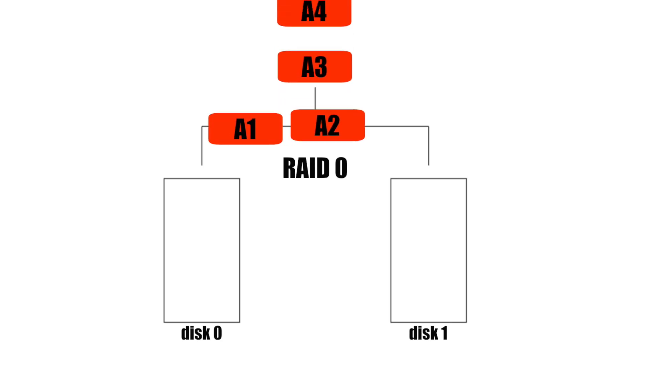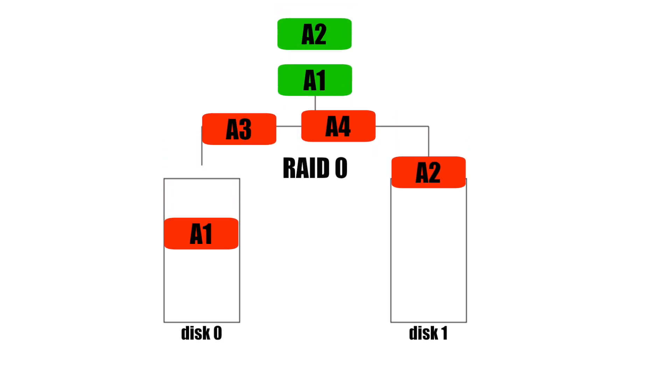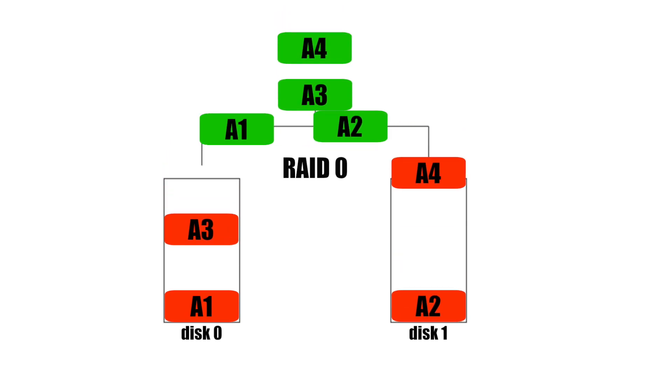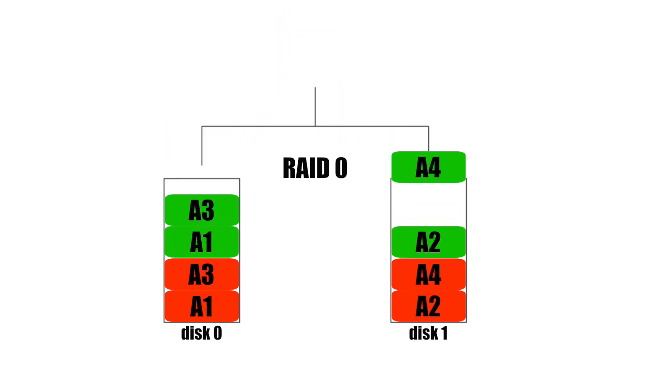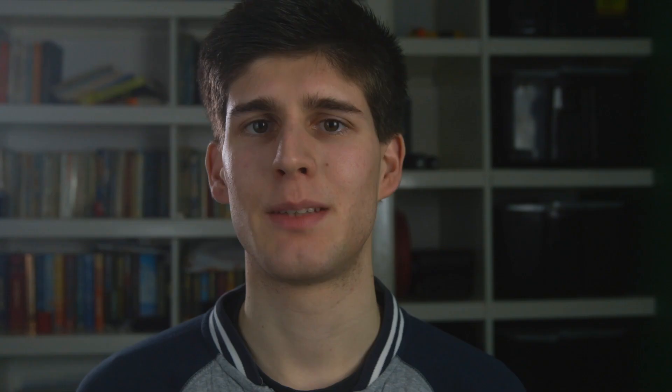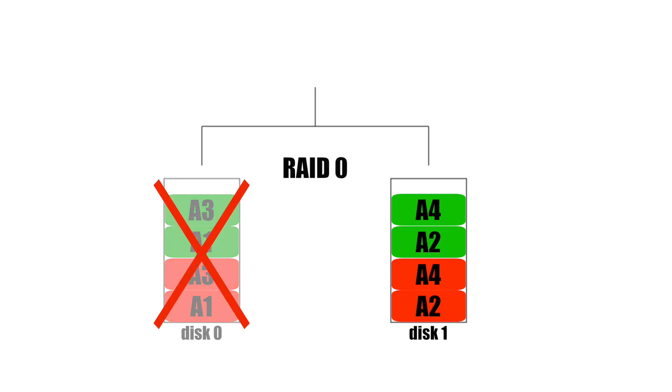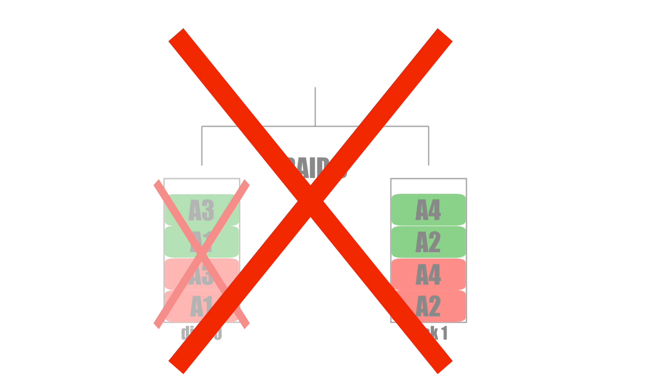RAID 0 works by striping together your drives so you can use all of their capacity. Basically it splits up your files and then sends different bits to each drive. This is very good for read and write speed, and very bad for reliability, because as soon as one drive breaks you lose all of your files.